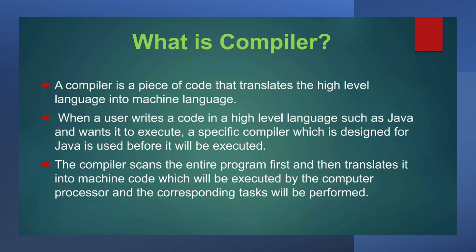What exactly is a compiler? A compiler is that high level language processor that converts the high level program into machine language. Its conversion manner is that it takes the entire high level language program in one go and reports all the errors of the program along with the line numbers. When a user writes code in a high level language such as Java, a specific compiler designed for Java is used before it is executed. The compiler basically scans the entire program first and then translates it into machine code, which will be executed by the processor.